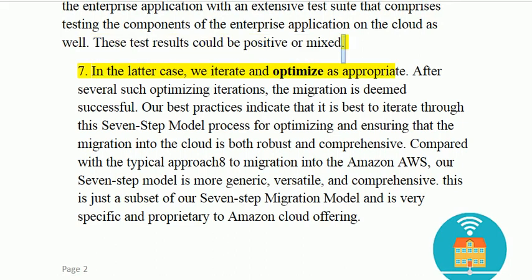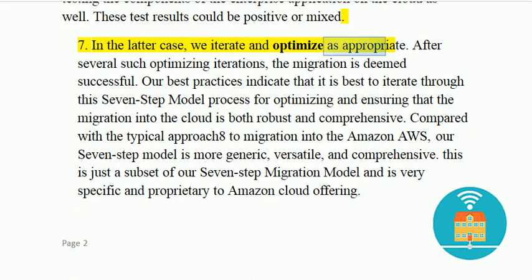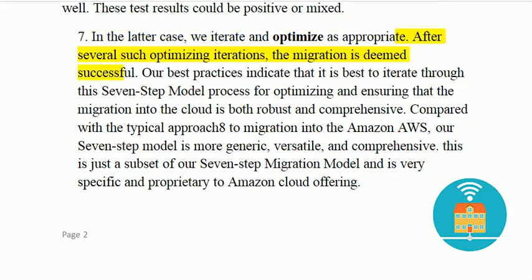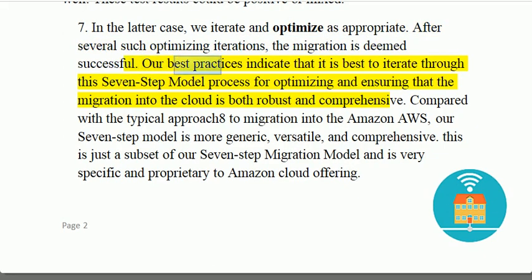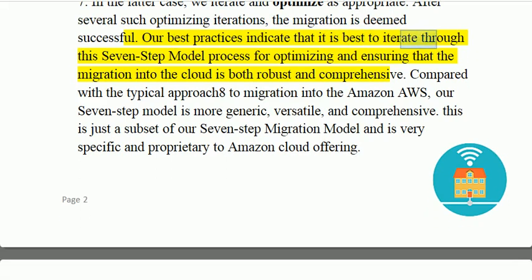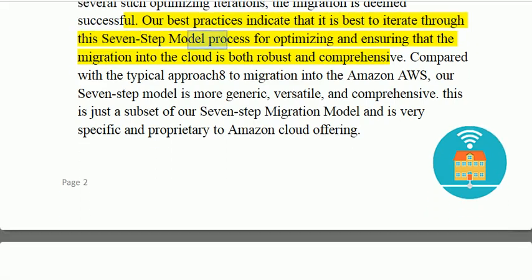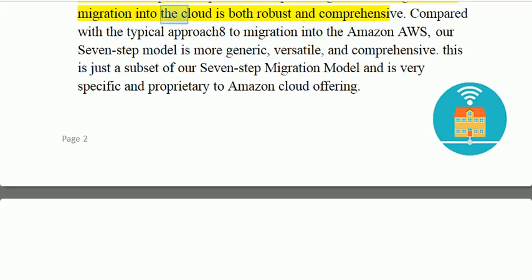Step 7: In the last step we iterate and optimize as appropriate. After several such optimizing iterations, the migration is deemed successful. Our best practices indicate that it is best to iterate through this seven-step model process for optimizing and ensuring that the migration into the cloud is both robust and comprehensive.